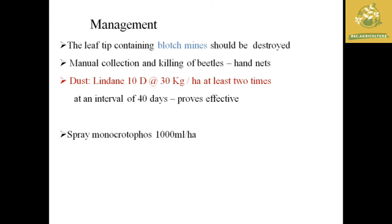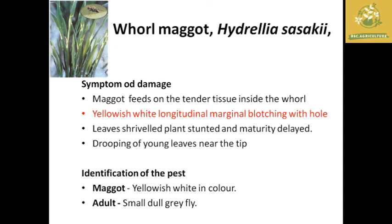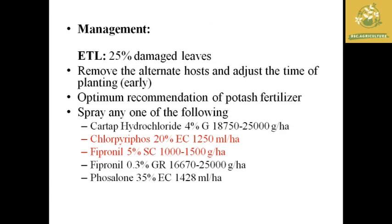Another important pest in rice is whorl maggot with scientific name Hydrellia sasakii. Symptoms: yellowish leaves with long marginal blotching and white holes on the leaf surface. Identification: maggot is yellowish-white in color; adult is a small, dull, gray fly. Economic threshold level is 25% damaged leaves. Management: remove alternate hosts, adjust time of planting, use optimum potash fertilizer recommendations, and spray insecticides like chlorpyrifos and fipronil.